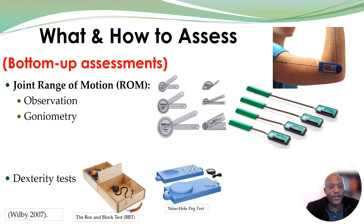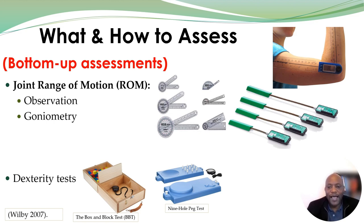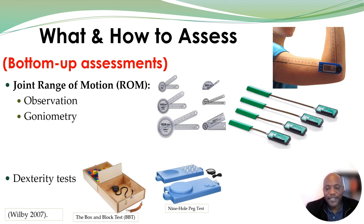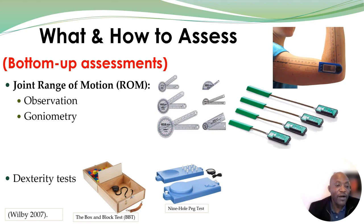The second one is dexterity — basically the rate of manipulation, the speed at which we can use our fingers, and the accuracy when performing a task. There are a number of tests that occupational therapists can use to test for dexterity. Two examples are the nine-hole peg test and the box and block test. Each assessment has clear instructions for how to use it, so when selecting an assessment it's important to read about its requirements and how it is administered.